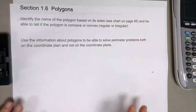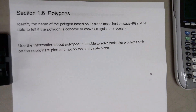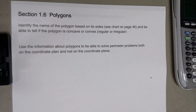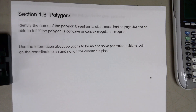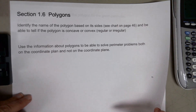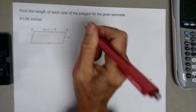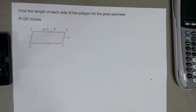Section 16 is polygons. You need to name a polygon based on the number of its sides — there's a chart on page 46 with them listed. You've got to tell whether it is concave (when you extend the lines, does it cross over on itself?) or convex. And if it's convex, is it regular (all sides and angles equal) or irregular (different measurements)? You also solve perimeter problems.